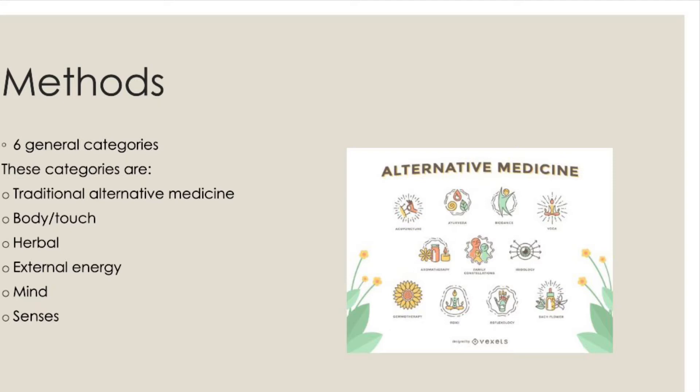Body/touch healing is when manual manipulation is used on the body to improve illness. Herbal approaches can be used to prevent various illnesses and diseases by trying to have a balanced nutritional well-being. Using external energy therapies is when energy from another source is used to impact someone's health. Mind therapies include things such as meditation — it is proven by various medical studies that when you have stronger mental and emotional health, you heal better and faster. Many people also believe that using your five senses — hearing, smell, sight, touch, and taste — can benefit your health through activities such as art or music.